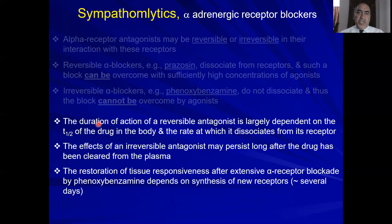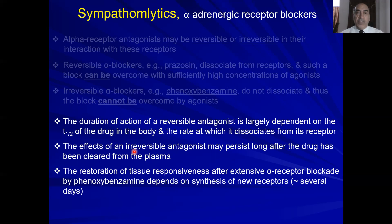Regarding duration of action, the duration of reversible antagonists depends on the half-life and the rate at which the drug dissociates from the receptor. However, the duration of action of irreversible antagonists is very much prolonged — the drug may be cleared from plasma within four to six hours, but the effect continues because the drug is still bound to the receptor. To regain receptor activity, the body has to synthesize new receptors.